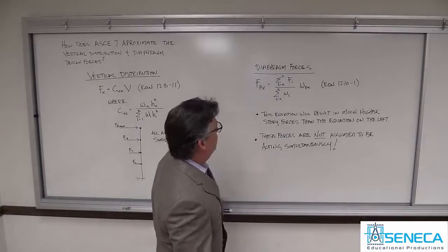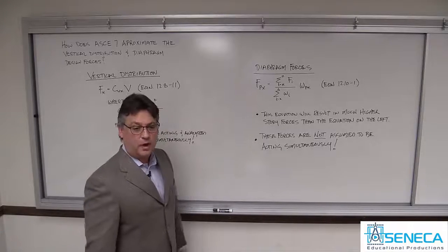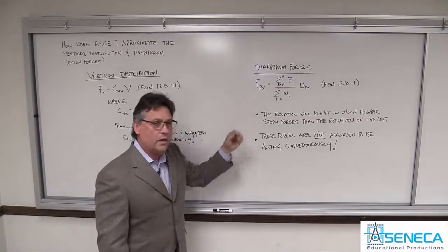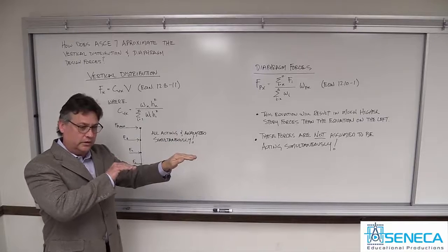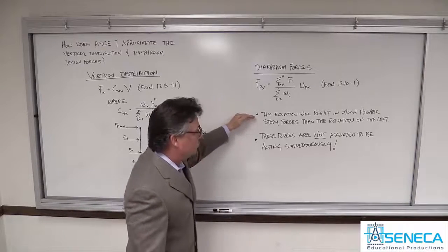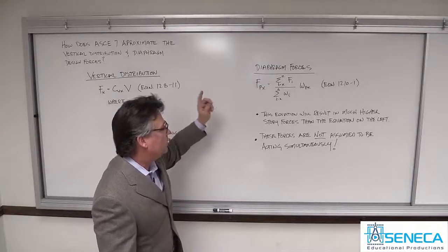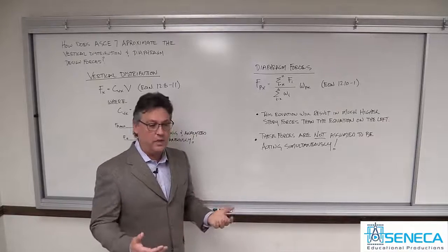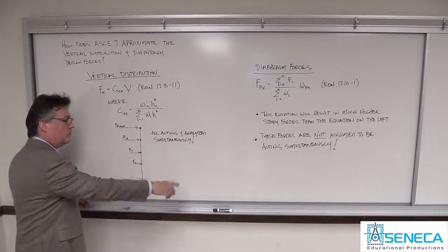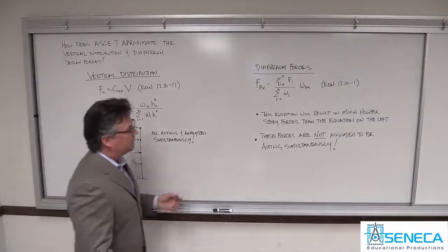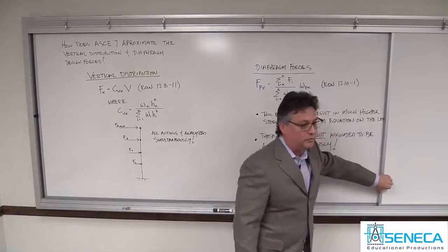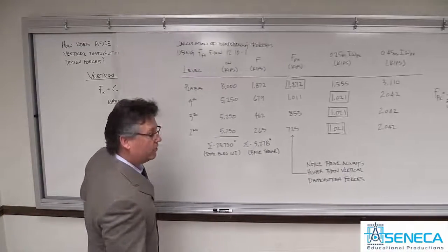Diaphragm forces, on the other hand, use a different equation — the FPX equation — which has not changed in my entire career. This is the equation the code uses to estimate the square root of the sum of the squares of the modal forces at each level. Not the modal shears, but the modal forces. As you will see in just a minute when I pull over the third board, this equation will result in higher forces at each level. That makes sense — the full set of simultaneous forces is not the highest you'd anticipate at any one level; it's the set that envelopes the story shears. The diaphragm forces are not assumed to be acting simultaneously.